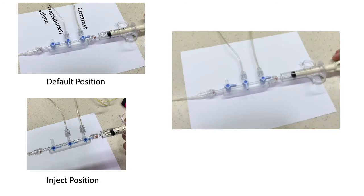So let's get started and look at a manifold as we have in the top left. The right port is for contrast. The other communicates with the transducer or the saline tubing.